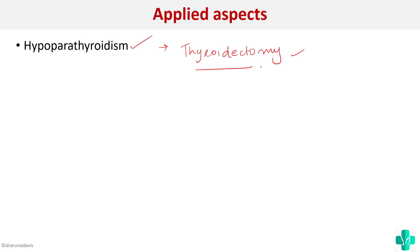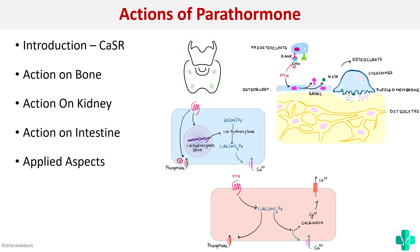In summary, when answering such a question: in the introduction, write about the parathyroid glands and mention the calcium sensing receptor, explaining how the gland detects blood calcium levels. Then write about actions on the bone, kidney, and intestine, and include applied aspects. I hope this concept is clear. Thank you.